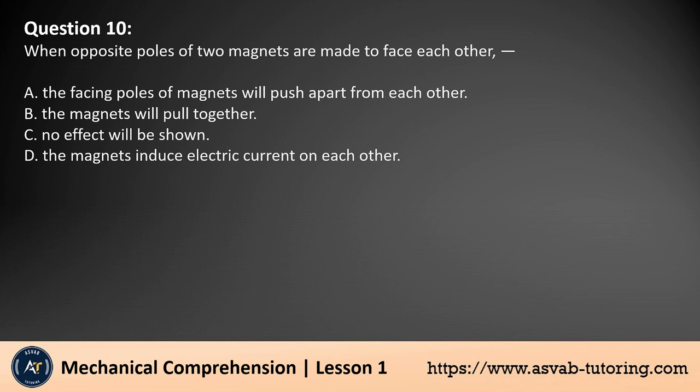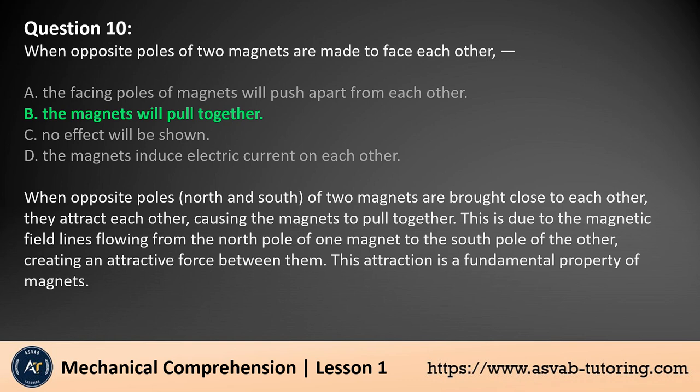Question 10. When opposite poles of two magnets are made to face each other: A. The facing poles of magnets will push apart from each other. B. The magnets will pull together. C. No effect will be shown. D. The magnets induce electric current on each other. The answer is B. When opposite poles, north and south, of two magnets are brought close to each other, they attract each other, causing the magnets to pull together. This is due to the magnetic field lines flowing from the north pole of one magnet to the south pole of the other, creating an attractive force between them. This attraction is a fundamental property of magnets.